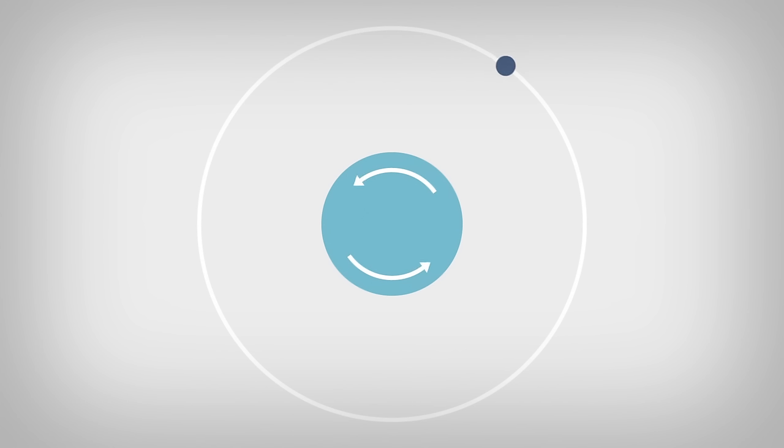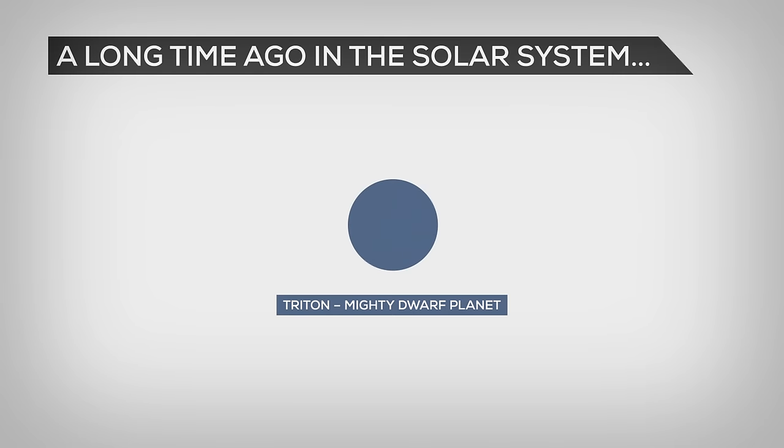Triton orbits Neptune in the wrong direction, against the rotation of Neptune, which is unique in our solar system for an object as big as Triton. We can conclude from this that Triton hasn't always been a moon of Neptune, but probably was a dwarf planet that was forced into submission by Neptune when the solar system was younger and more chaotic.